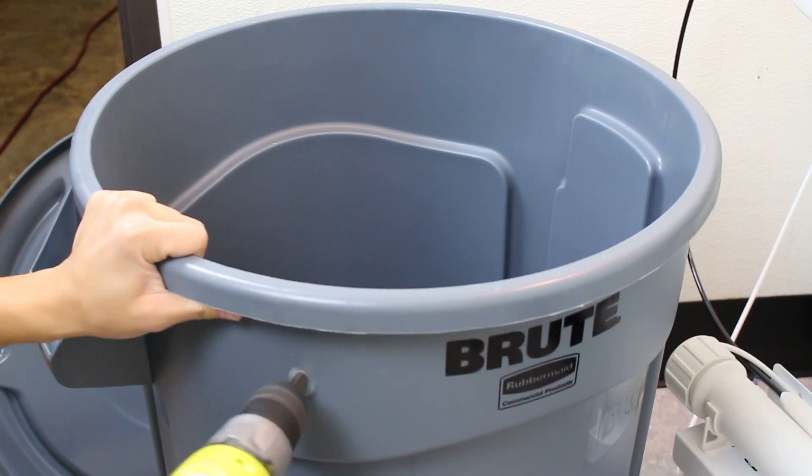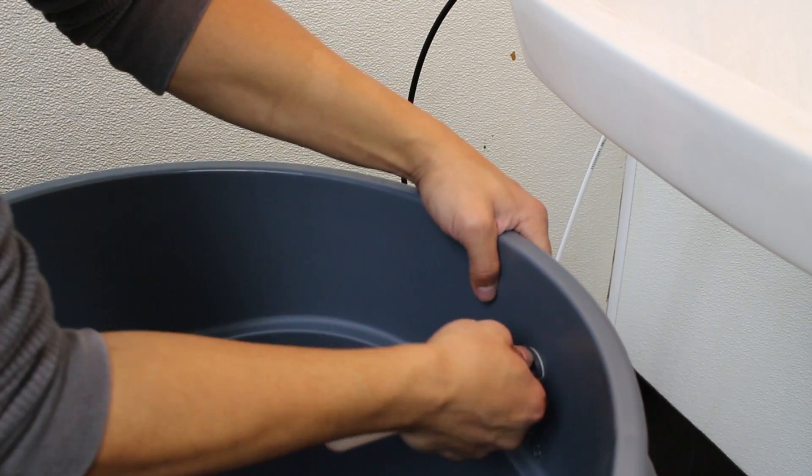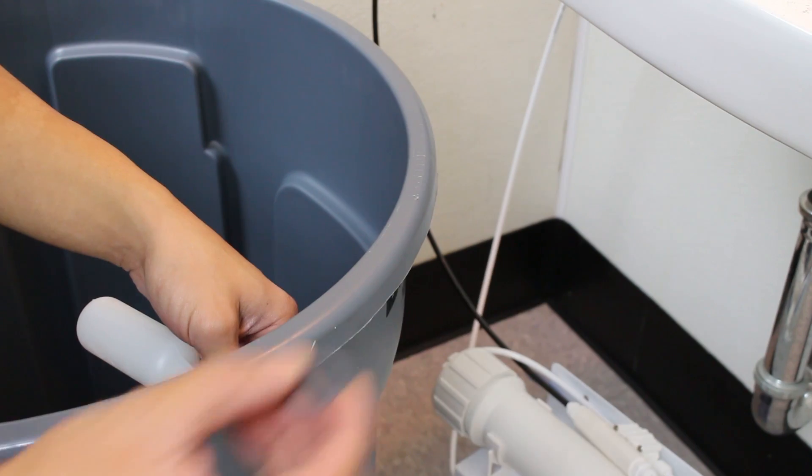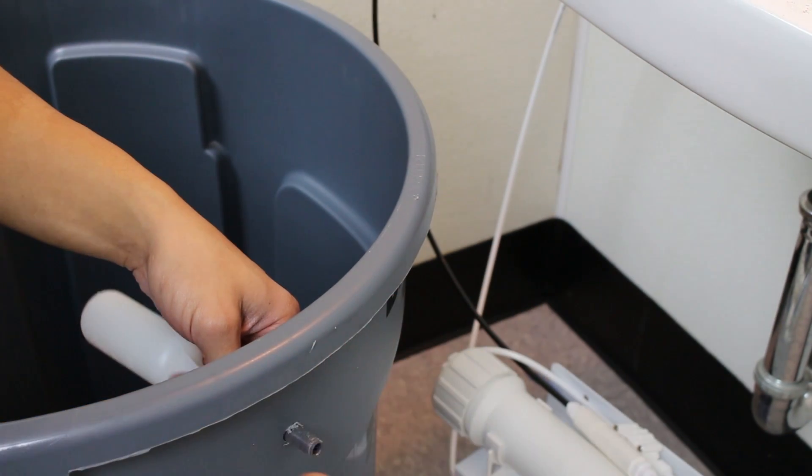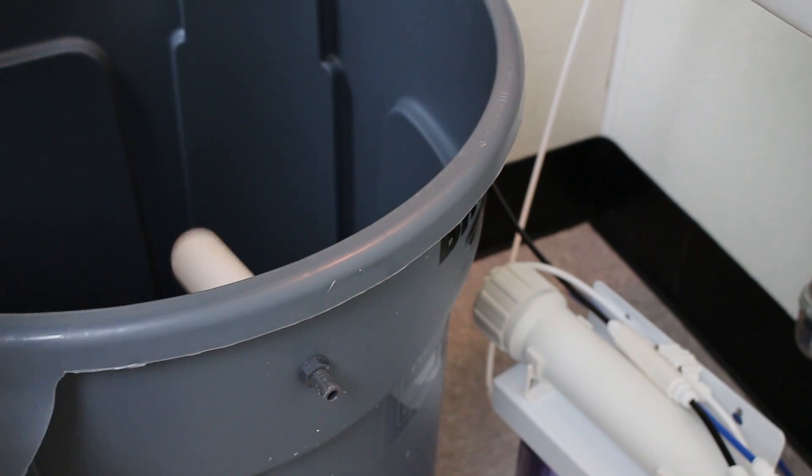After, we'll work on the reservoir. Drill a hole at the top that's big enough to fit your floating shutoff valve. Then go ahead and fit the valve through the hole. Secure the valve in place with the plastic nut that it comes with, then attach the hose adapter to the valve as well.